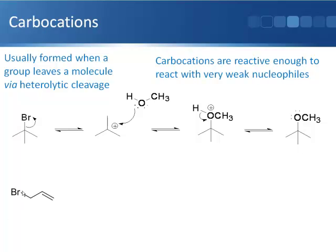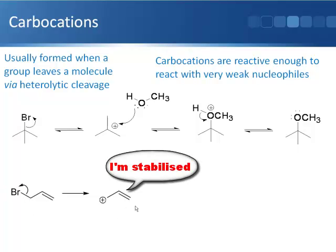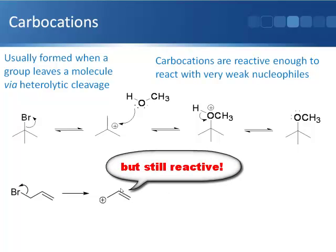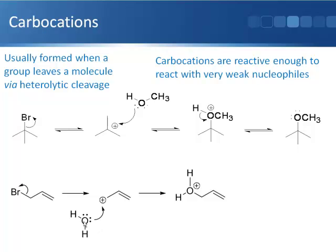To show how an allyl carbocation is formed and then reacts: we start with allyl bromide, and through heterolytic bond cleavage we get a relatively stable carbocation — though it is still a reactive species. This can react with a weak nucleophile like water to form a new carbon-oxygen bond. We then lose the proton to neutralize the positive charge and obtain our neutral product.